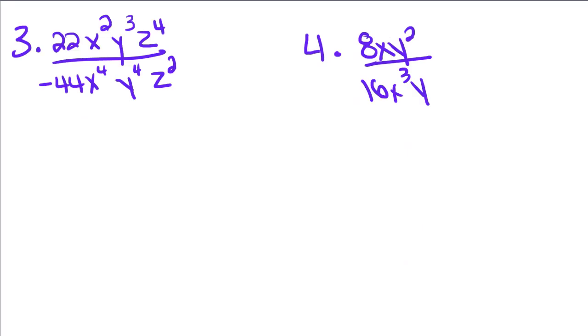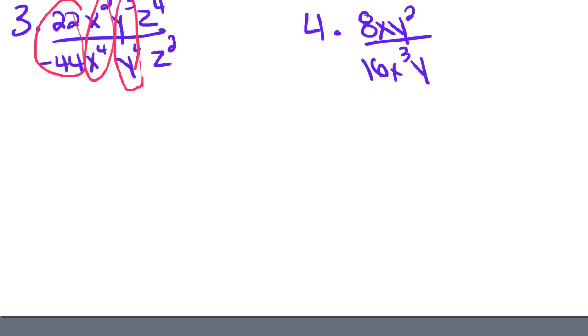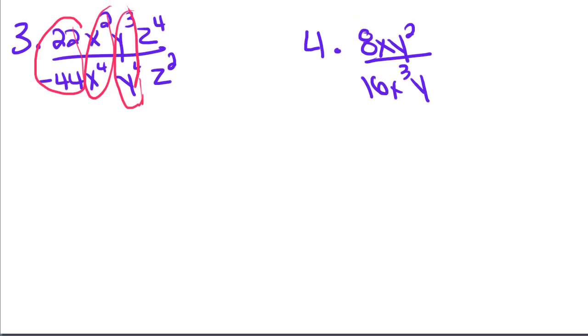We have a couple more examples. So we always divide only like numbers. So 22 divided by negative 44 is going to be negative 1 half. x squared divided by x to the 4th is going to be 2 minus 4, which gives us negative 2. So that means the x squared stays on the bottom.